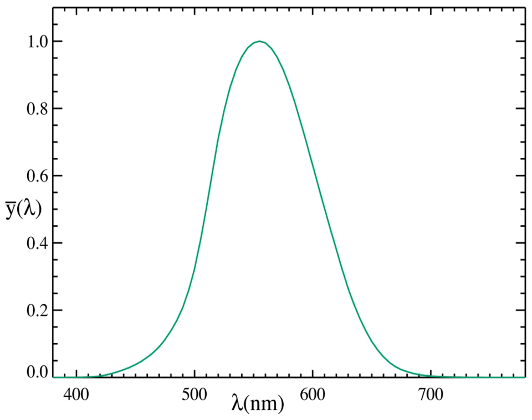This is a standardized function which represents the response of a typical eye under bright conditions. One can also define a similar curve for dim conditions. When neither is specified, photopic conditions are generally assumed.